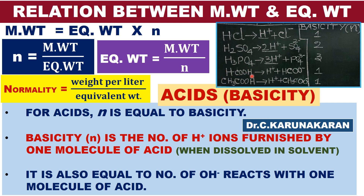For formic acid, the carboxylic acid proton is the acidic ionizable proton, whereas the CH proton is not an ionizable proton. There is only 1 replaceable ionizable proton in formic acid, so it furnishes 1 H+ ion. In the case of acetic acid, there are 4 hydrogen atoms, but students mistakenly write N equal to 4. Only 1 replaceable acidic ionizable proton exists; the methyl group protons are not ionizable. So the basicity of acetic acid and formic acid is N equals 1.